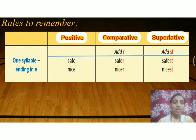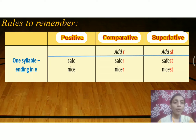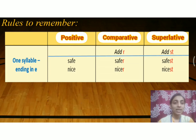Now let us change the adjective 'nice' into its comparative and superlative forms. The comparative form of 'nice' is N-I-C-E-R: nicer. The superlative form of 'nice' is N-I-C-E-S-T: nicest. Fine, children.